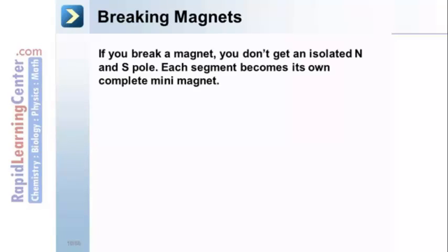Breaking magnets. If you break, or split apart, a magnet, you don't get an isolated north and south pole, as you might imagine. Each segment becomes its own complete mini magnet.